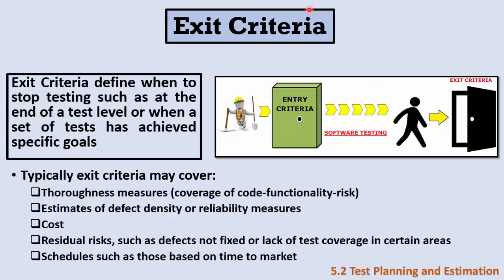With entry criteria always comes exit criteria. Exit criteria defines when to stop testing. For example, in unit testing we might require 100% decision coverage as an exit criterion. Examples of exit criteria include thoroughness measures — how deeply we covered the code, functionalities, and risks — defect density (how many defects remain and whether the system is reliable), and the cost of testing, since if the budget is exhausted we must stop. There is also residual risk — defects not fixed because we didn't cover all areas of the software.